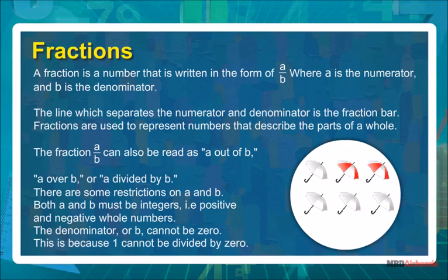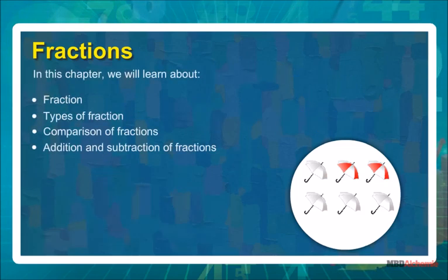The fraction can also be read as a out of b, a over b, or a divided by b. There are some restrictions on a and b: both a and b must be integers, that is, positive and negative whole numbers. The denominator, or b, cannot be zero. This is because one cannot be divided by zero.